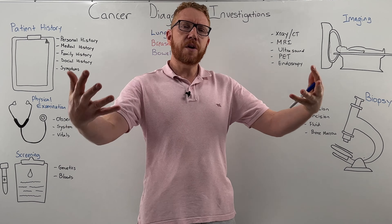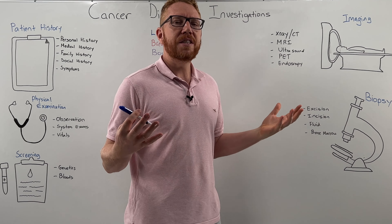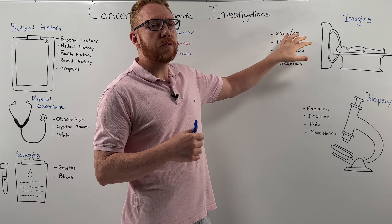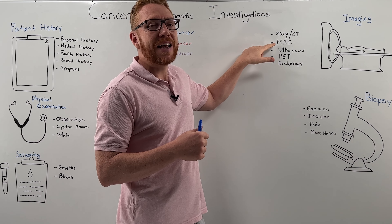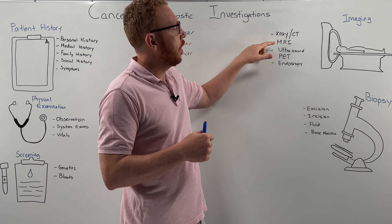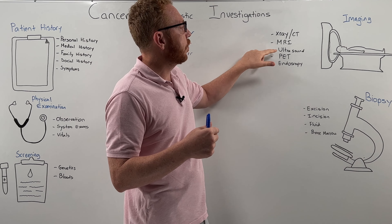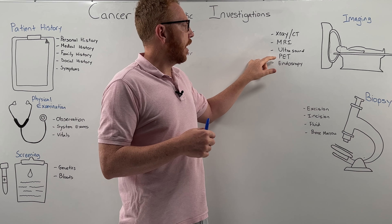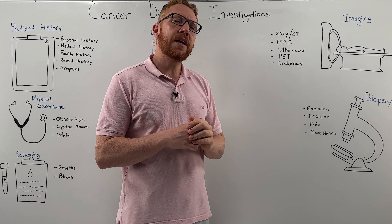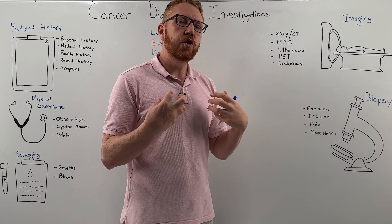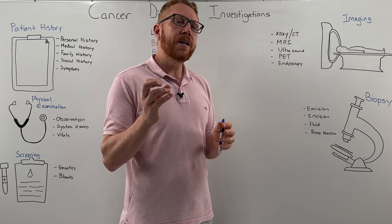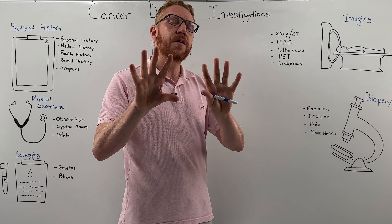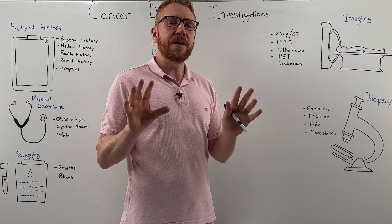Imaging involves looking inside the body using different modalities. Radiation techniques include X-ray and CT. Magnetic approaches include MRI. Sound waves give us ultrasound. There is also the PET scan — positron emission tomography — where the individual consumes a radioactive dye commonly associated with glucose. Cells take this up, and we can then see which parts of the body may have cancer.